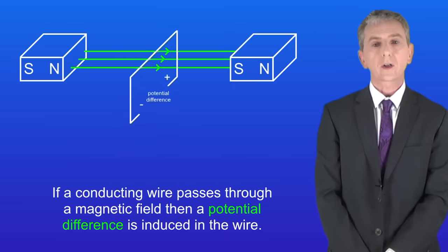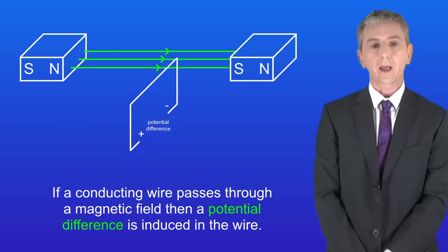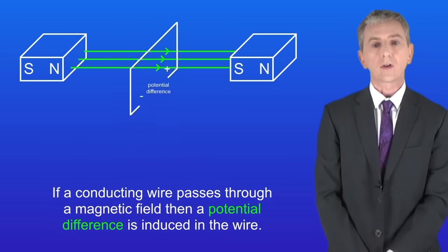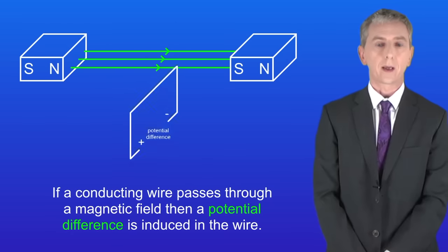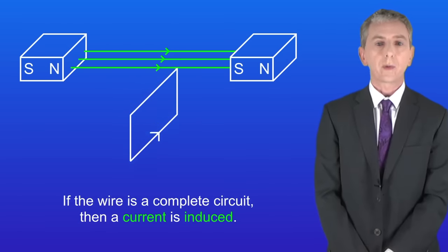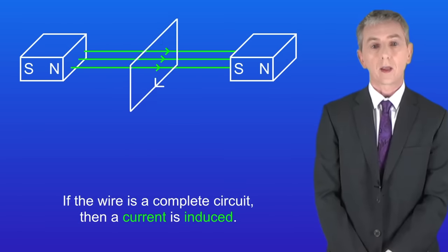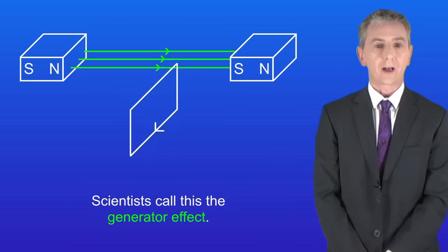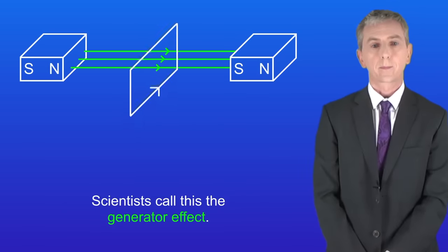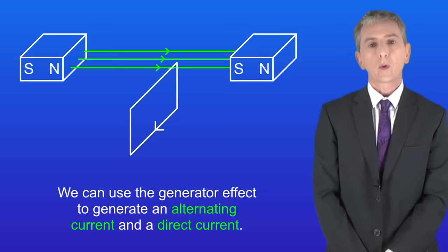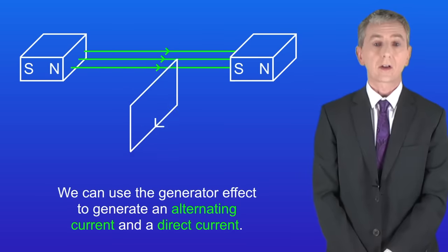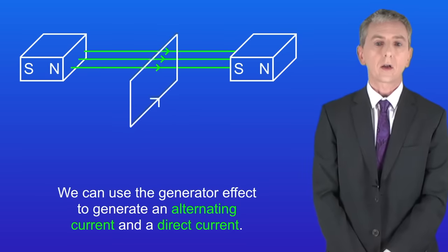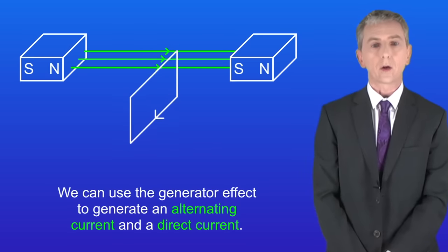In the last video we saw that if a conducting wire passes through a magnetic field then a potential difference is induced in the wire, and if the wire is a complete circuit then a current is induced. Scientists call this the generator effect. We can use the generator effect to generate an alternating current and a direct current, and we're going to look at that in this video.